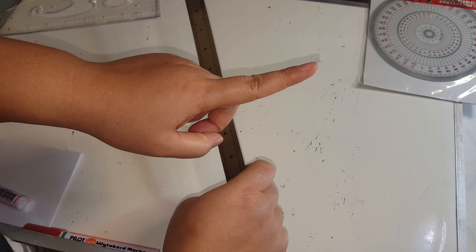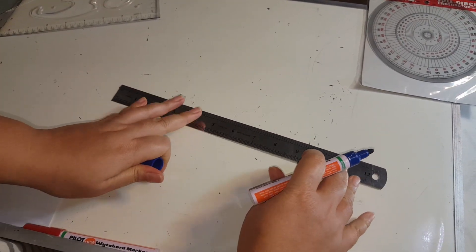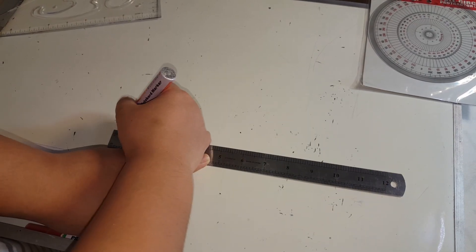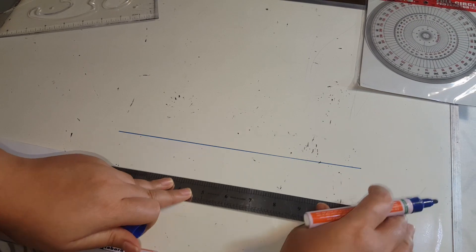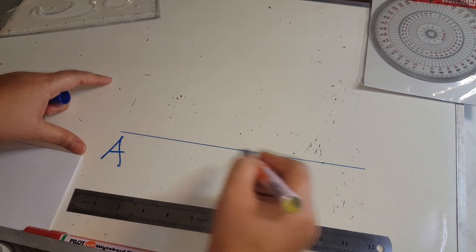Step number one. We draw a line. I will name this line, line AB.